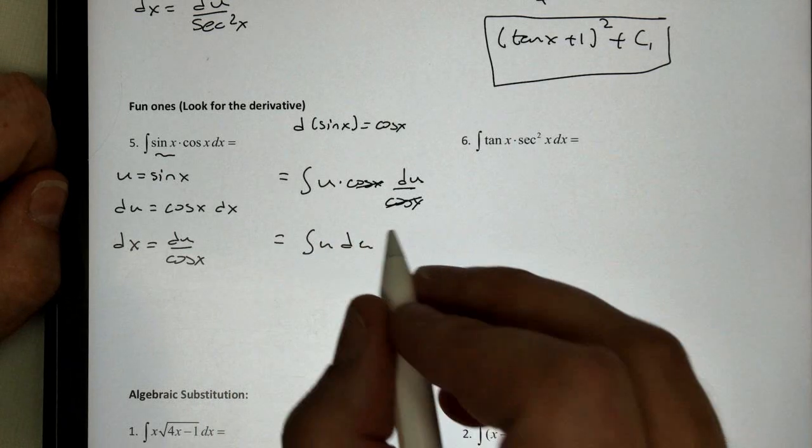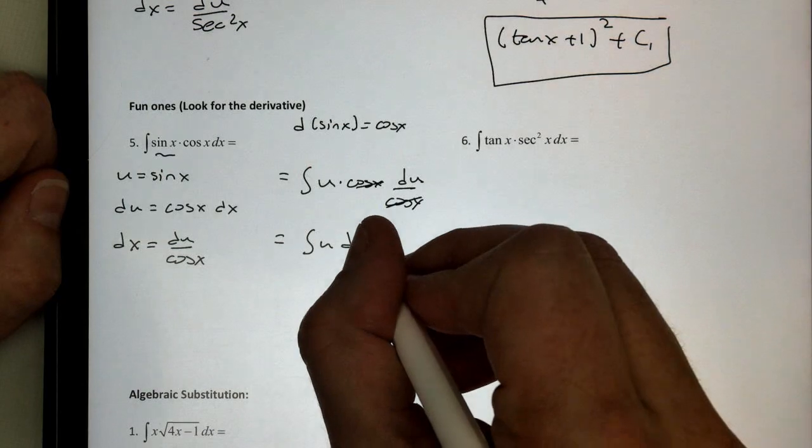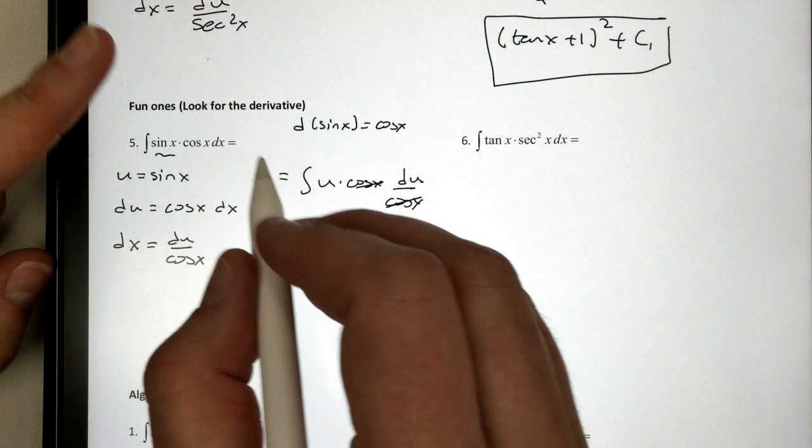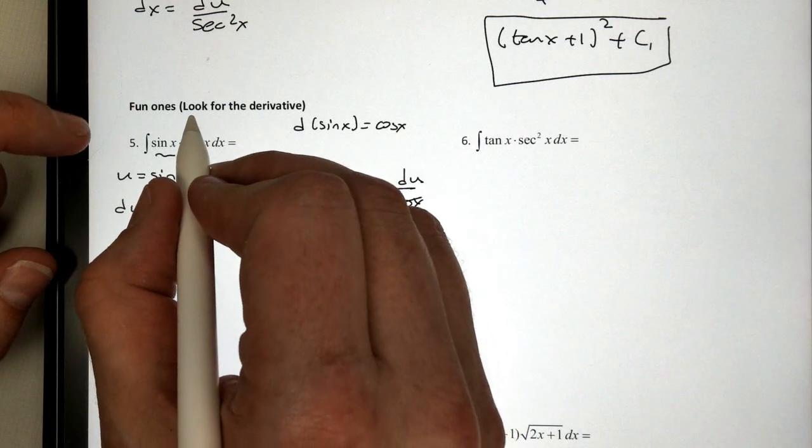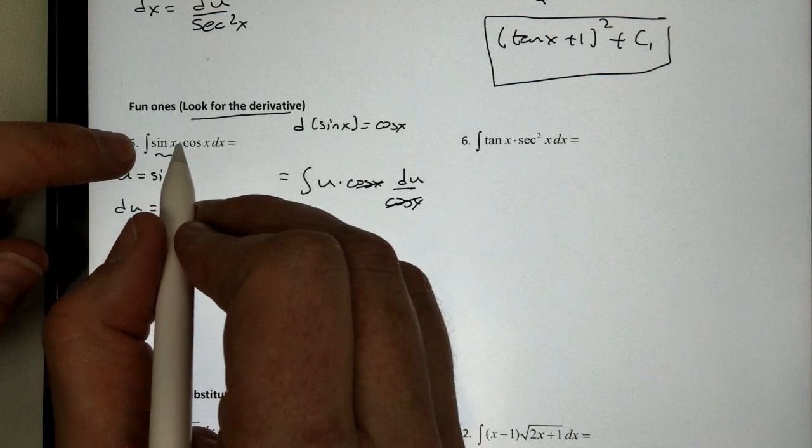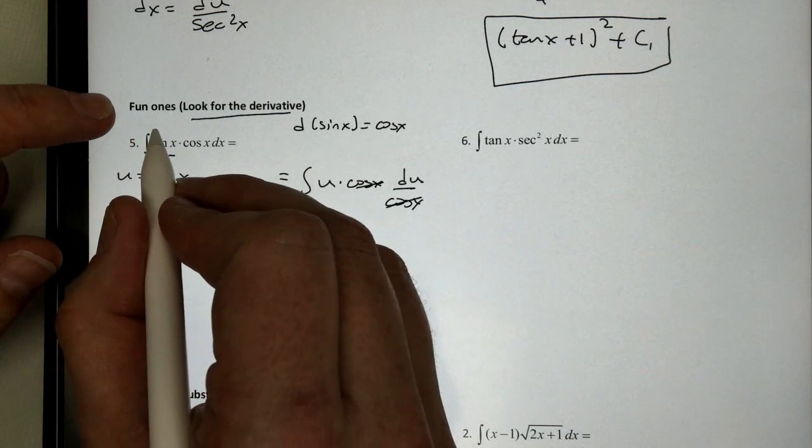We want all the x's to go away. We want all the x's to go away. And then we're only left with u. So for some problems, all we're going to do is look for the derivative. For example, here, cosine is the derivative of sine. So I'm going to let sine be my u.